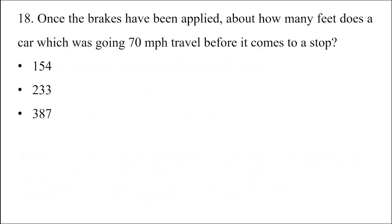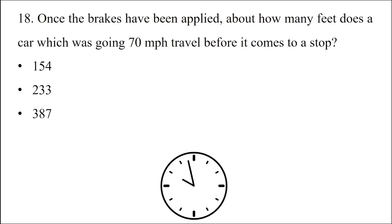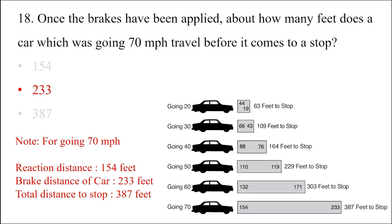Question: Once the brakes have been applied, about how many feet does a car going 70 miles per hour travel before it comes to a stop? Option 1: 154 feet. The braking distance of the car is 233 feet. Total distance to stop is 387 feet.